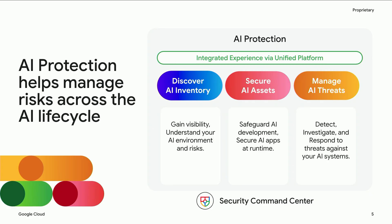AI protection helps accelerate AI transformation by providing the necessary security guardrails and helps customers manage risks holistically across the entire AI lifecycle. It delivers that through three foundational pillars: discovering AI inventory, securing AI assets, and managing AI threats. Today, we are very excited to announce that we are extending AI protection capabilities to also cover novel agentic AI risks across all of these three pillars.